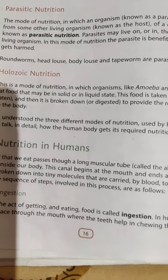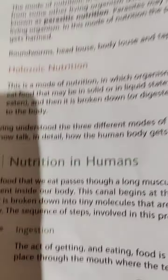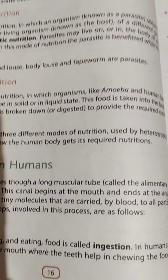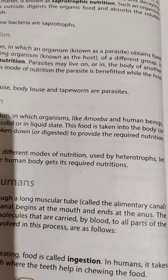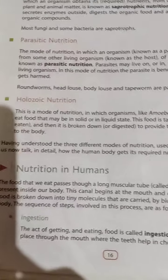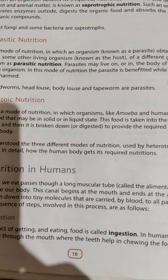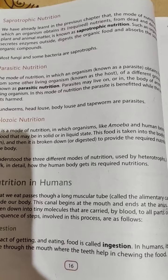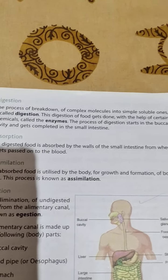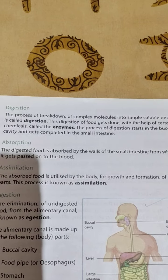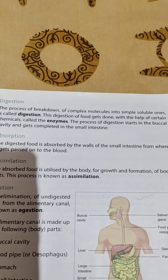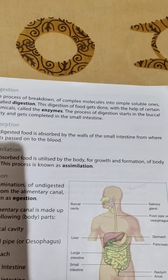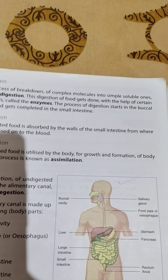Now we will go through the lines in your book. The first step is ingestion. The act of getting and eating food is called ingestion. In humans, it takes place through the mouth where the teeth help in chewing the food — so digestion starts from the mouth. The next step is digestion — breaking down of the food. This happens with the help of certain chemicals called enzymes. The process of digestion starts in the buccal cavity.